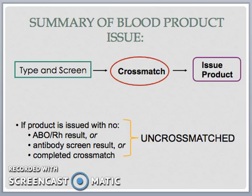Therefore, when red cells are released without finalizing the ABO/RH type, the antibody screen result, or the cross-match, then the units are uncross-matched. Group O red cells are released as uncross-matched red cells when the patient's blood group is unknown or not yet determined. But once the typing is available after five minutes, emergency release of group-specific uncross-matched red cells may be released before the antibody screen and cross-match are completed.